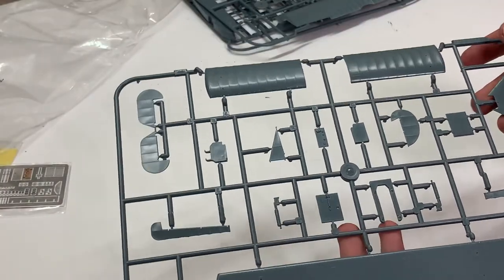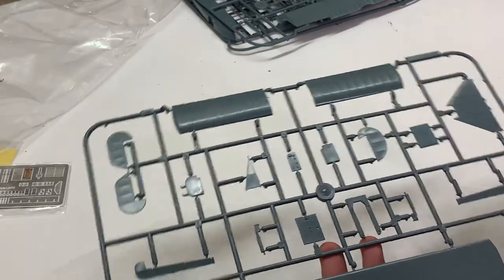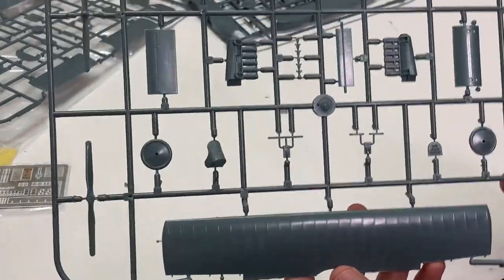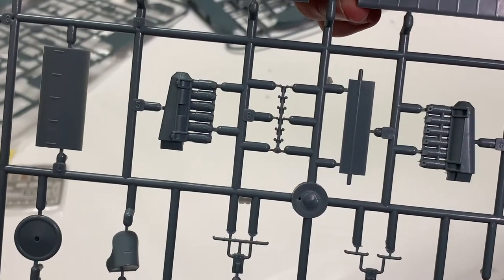The first one contains the wing and some details for the cockpit and interior. The second sprue contains the other parts of the wing and some engine details on the inside here.